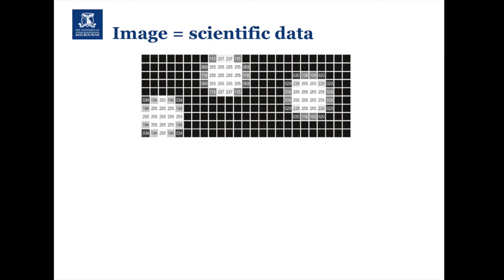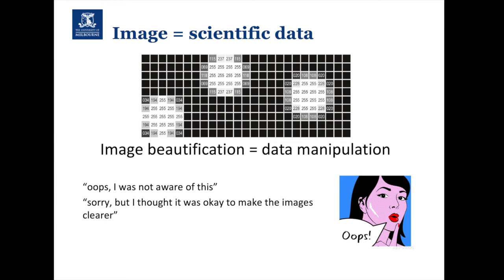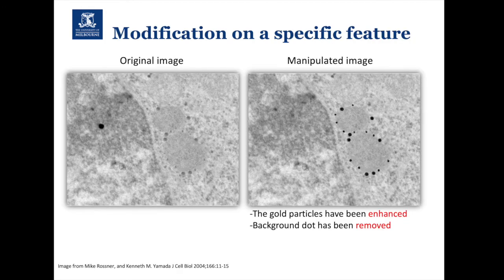Although it looks like an image, it's actually an Excel spreadsheet of values — your image is scientific data. If you're trying to make the image look more beautiful, you're actually manipulating the data. Hopefully nobody would go into an Excel spreadsheet and start randomly changing numbers. You can no longer say 'I thought that'd be okay' or 'I wasn't aware of this,' so you really have to treat your scientific data ethically. We'll take you through a few examples of what you should and shouldn't be doing.